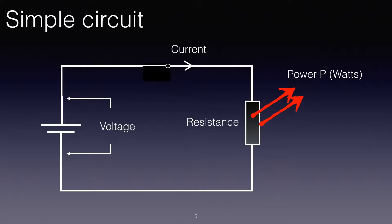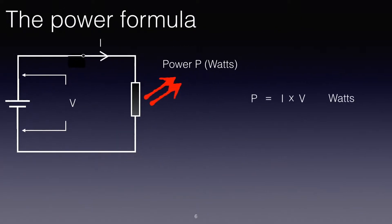Well, how much power do we generate or how much power is dissipated? Let's call the power P watts. And the equation that links the power to the current and the voltage is P equals I times V, and remember the unit of power is the watt. P equals IV.